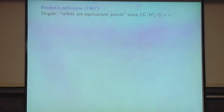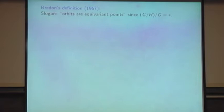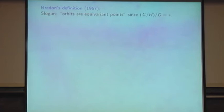We want to go to Bredon cohomology, which does know more about characteristic classes. His definition — he defined it first in 1966, published in 1967. I'll tell you a quick story. I was at the Institute for Advanced Study in the fall of 1966, and Glenn Bredon gave two talks. The first was well attended, about 35 people. The second, there were only three people: Dean Montgomery, who was the director of the School of Mathematics at the Institute, Glenn Bredon, and myself. Dean Montgomery got very embarrassed and said something to the effect that maybe the quantity of the audience is made up for by its quality. Then he turned to introduce me and it became obvious he had absolutely no idea who I was.